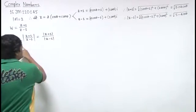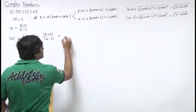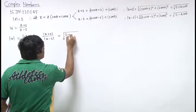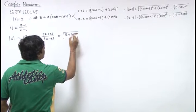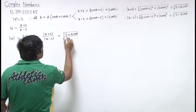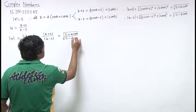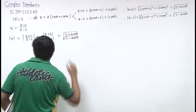So, from here mod of w is under root 5 plus 4 cos theta upon 5 minus 4 cos theta.